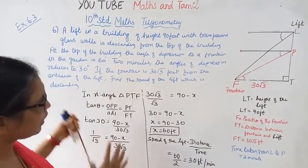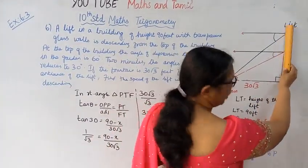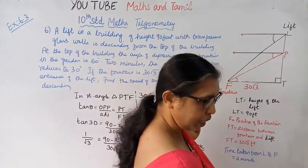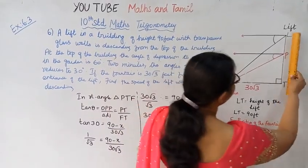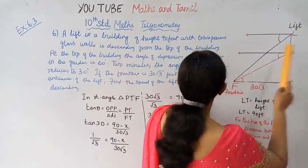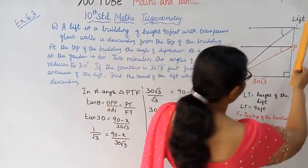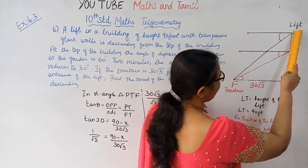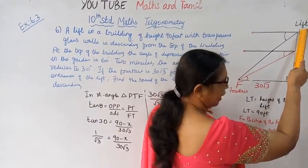Now let me draw the diagram for you. There is one lift - it's a very high building, like a mall. The lift is at the top initially, marked as LT. Then the lift descends down.